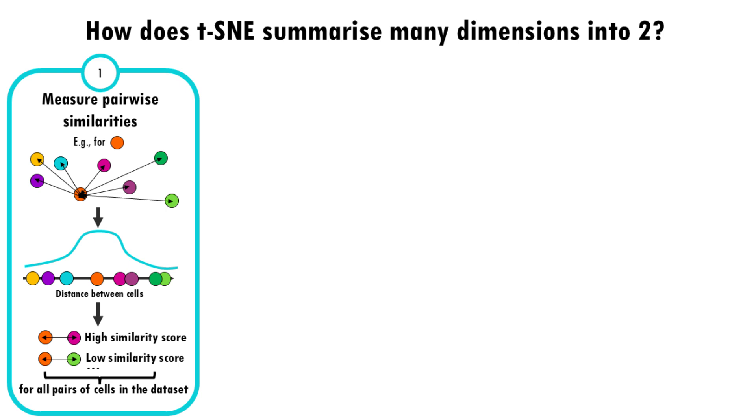First, we measure pairwise similarities. So t-SNE calculates how similar each pair of cells is to each other. It does this by looking at the distance between them, often using a method like Gaussian or normal distribution. The idea is that if two cells have very similar gene expression profiles, they should have a high similarity score, and if they're far apart, the similarity score should be low.